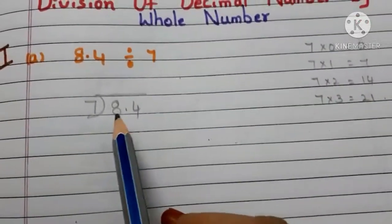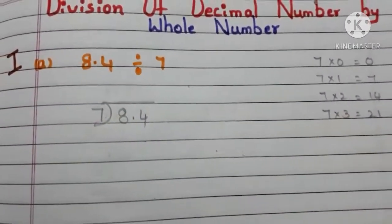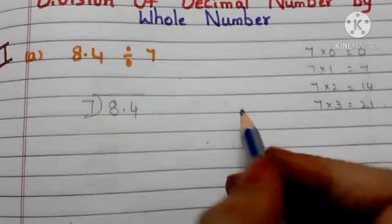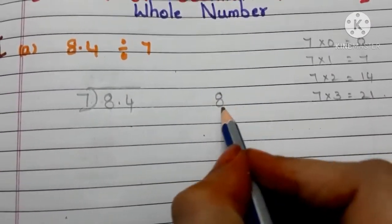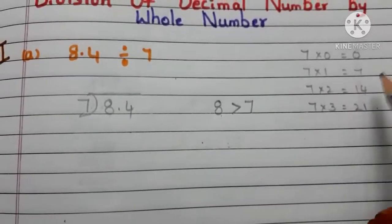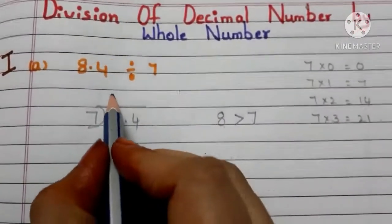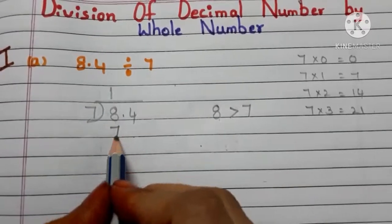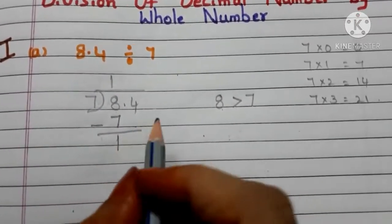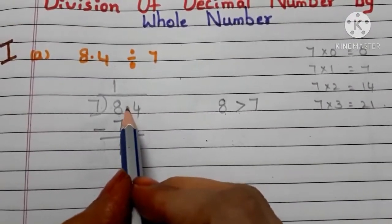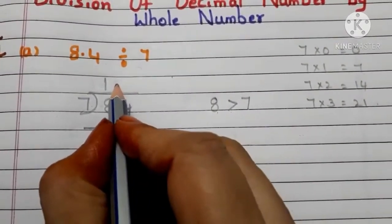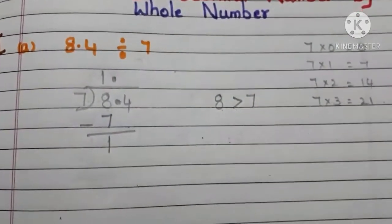Here, 8.4 is the dividend and 7 is the divisor. In the dividend 8.4, we have 8 first, and 8 is greater than the divisor 7. So we can take 7 once — that is 7. Write 1 in the quotient, 7 below, and 8 minus 7 is 1. Since there is a decimal point after 8 in the dividend, we need to put the decimal point in the quotient.